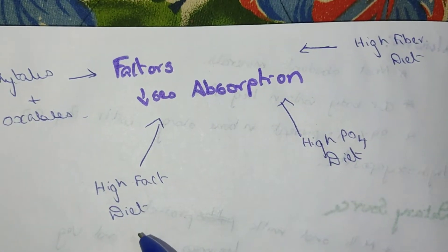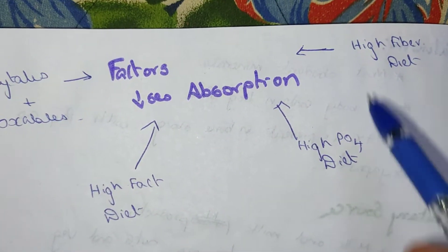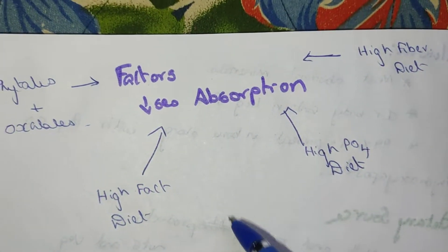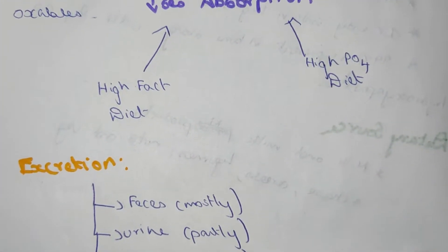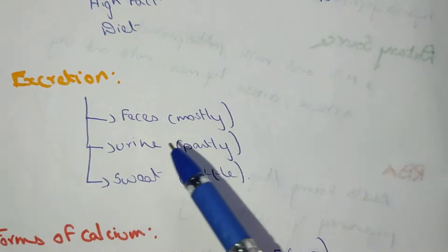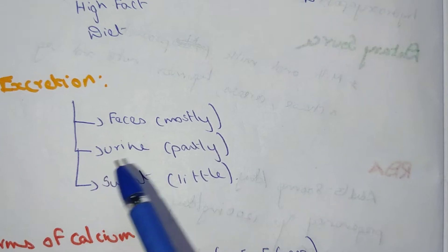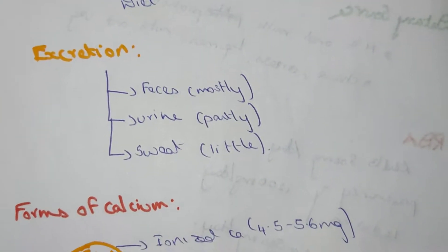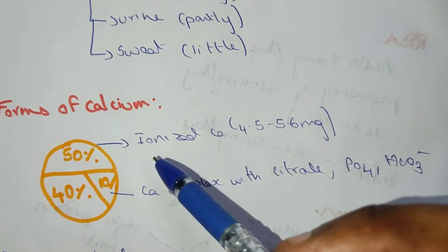The factors which decrease calcium absorption are phytates and oxalates, high fat diet, high phosphate diet, high fiber diet, and the hormone calcitonin. Regarding excretion, calcium is mostly excreted in feces, partly in urine, and a little in sweat.